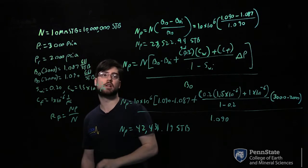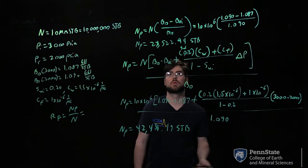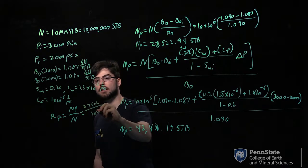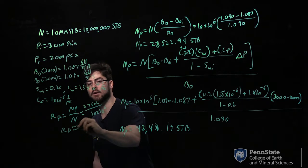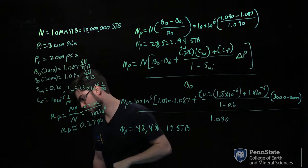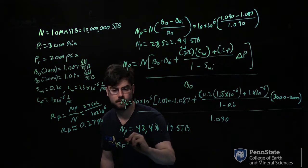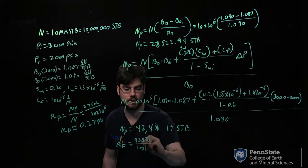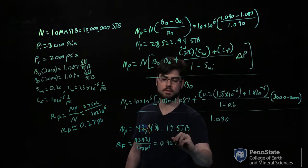For the volumetric condition, our oil production was 27,522 STB divided by 10 times 10 to the 6, giving a recovery factor of about 0.27%. For the non-volumetric method, we have 42,131 divided by 10 times 10 to the 6, giving a recovery factor of about 0.424%.